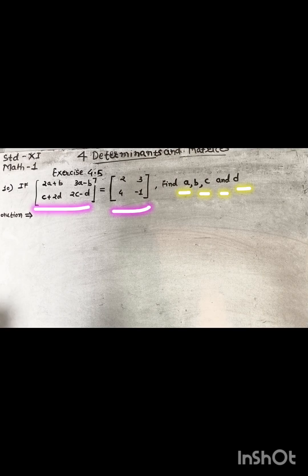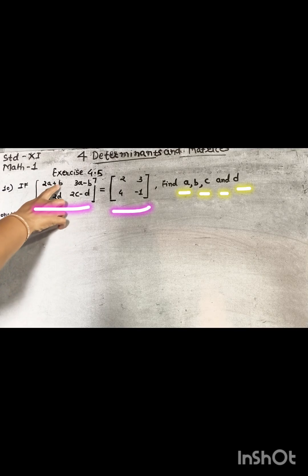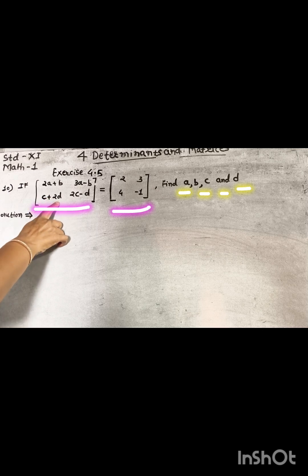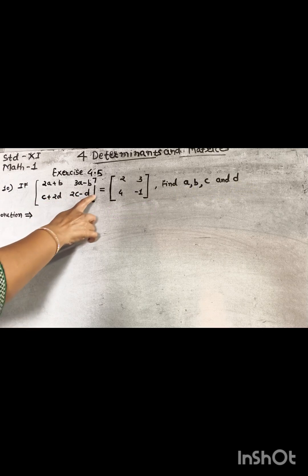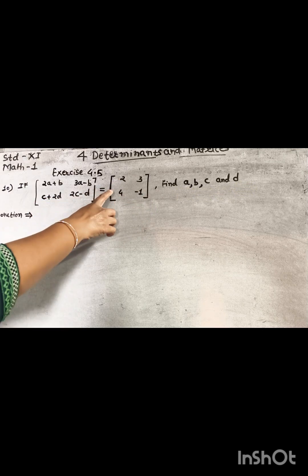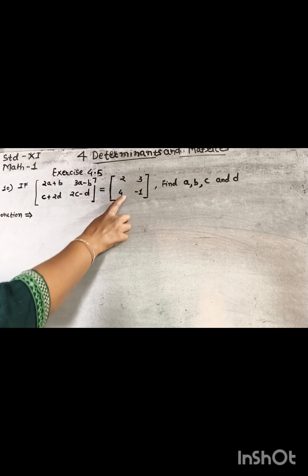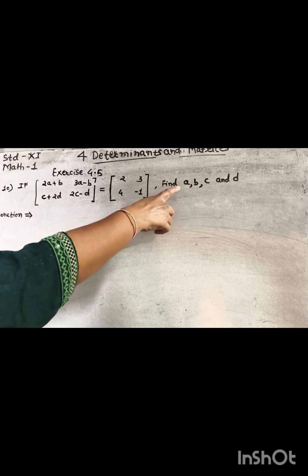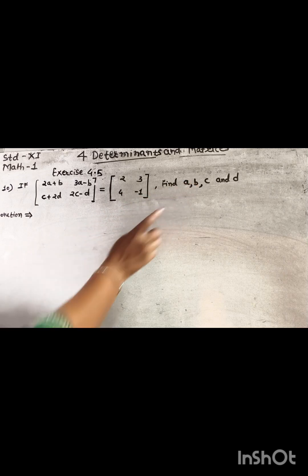Question 10. If a matrix contains elements 2a plus b, 3a minus b, c plus 2d, 2c minus d, equal to a matrix containing elements 2, 3, 4, and negative 1, then find a, b, c, and d.